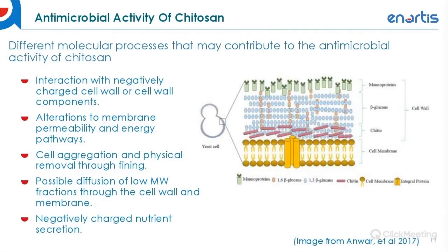Here we have some of the different molecular processes that may contribute to the antimicrobial activity of Ketozan. These include the interaction with negatively charged cell wall components, proteins in the phospholipid bilayer, alterations to membrane permeability and various energy pathways. There is also physical fining and cell aggregation through physical removal, possible diffusion of low molecular weight fractions through the cell wall and membrane, and negatively charged nutrient sequestration. For example, copper is a survival factor for some organisms, and Ketozan can help remove some of these survival factors.